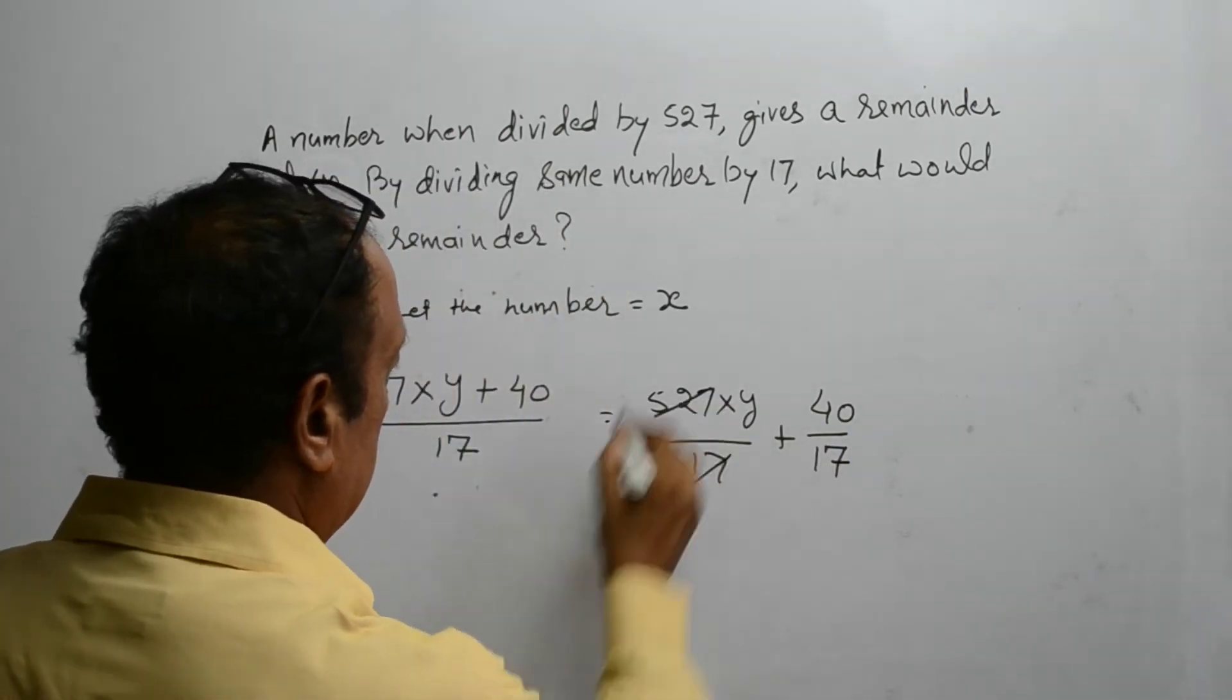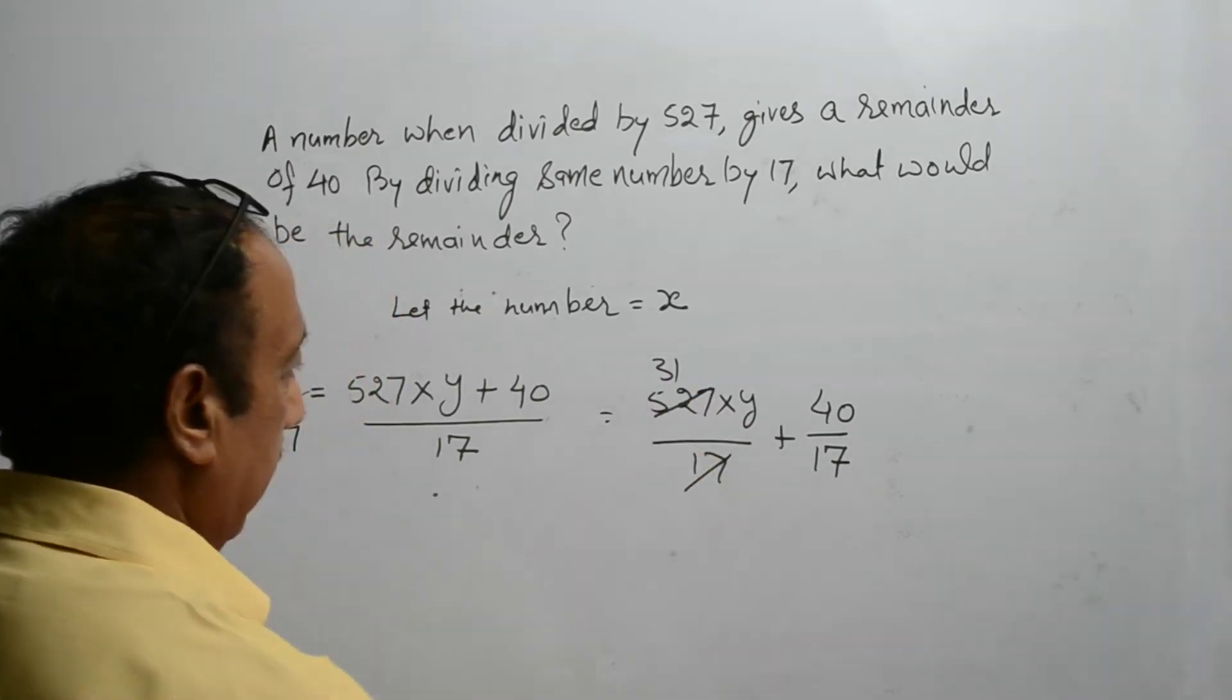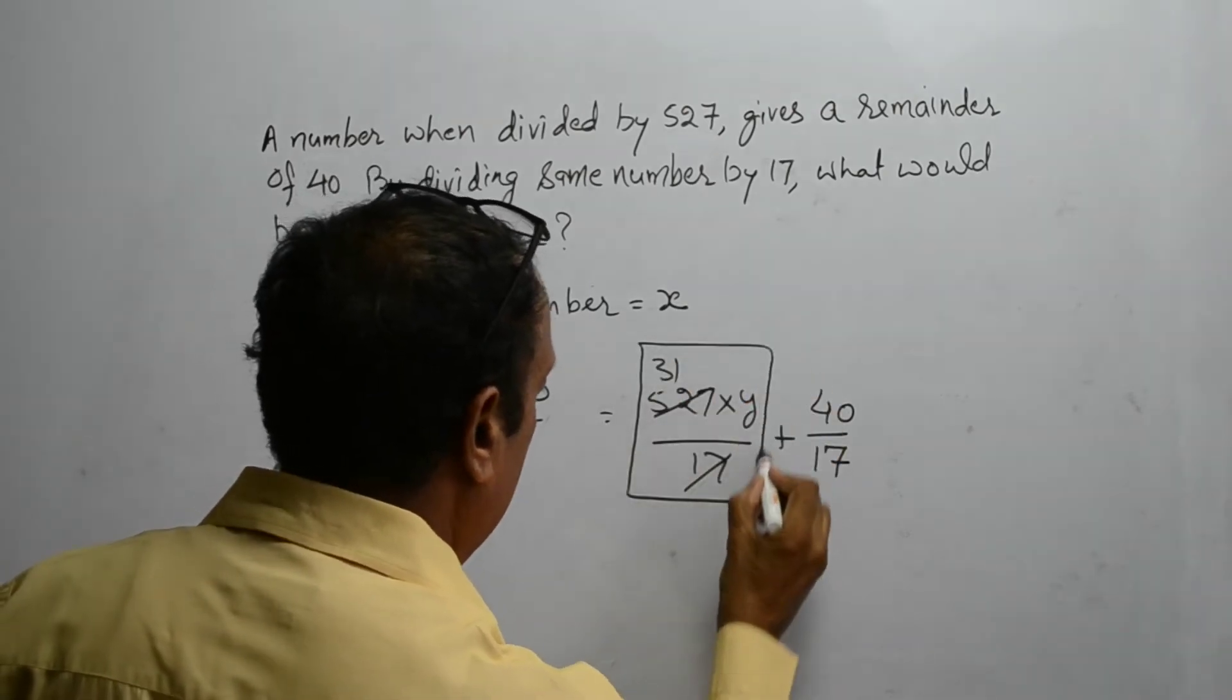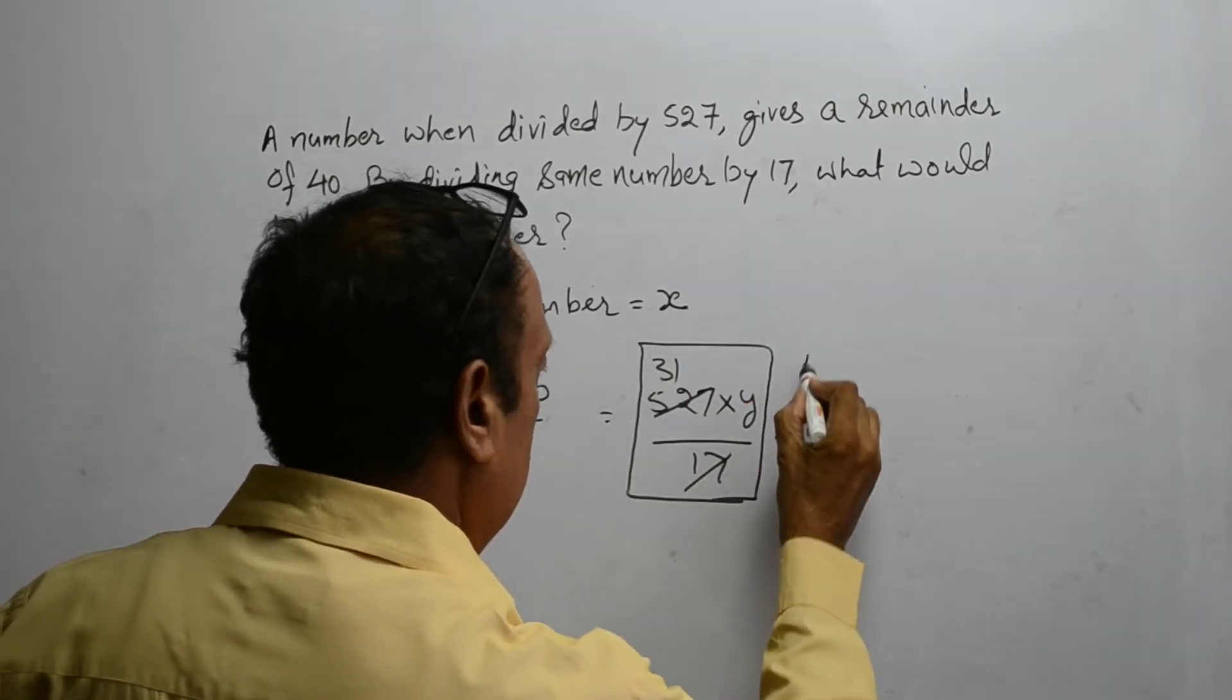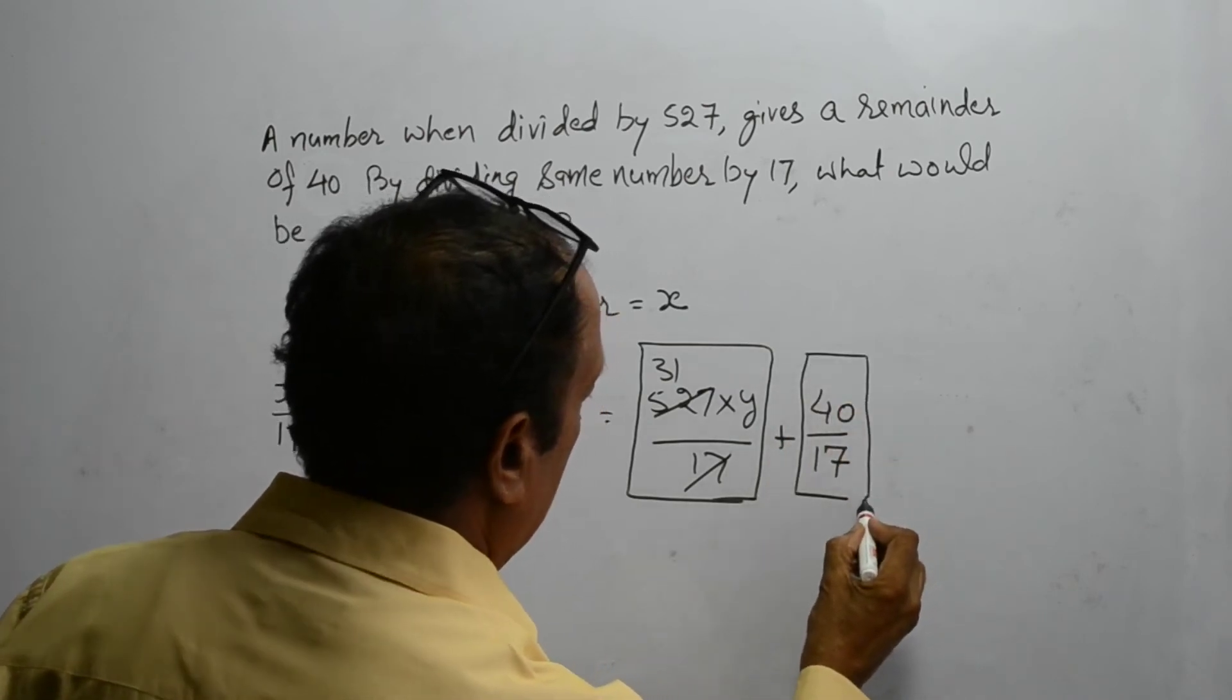This is divisible by 17 already. So, this portion was already divisible by 17. The remainder of this portion is going to give us the answer.